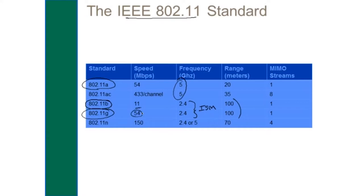By the way, it's not the frequency that determines the bandwidth — it was how we encoded the data as we send these analog radio waves through the air. That's what made the big difference.